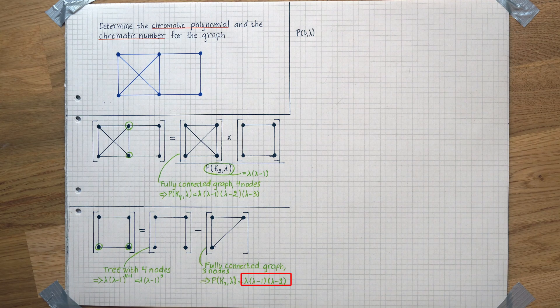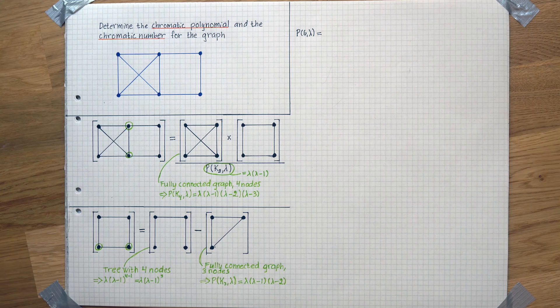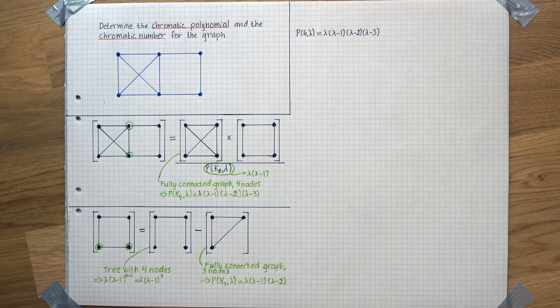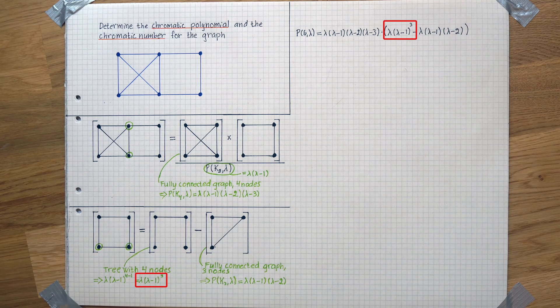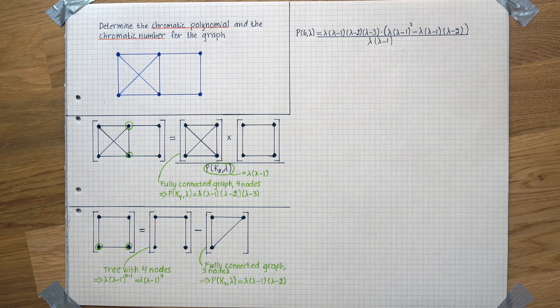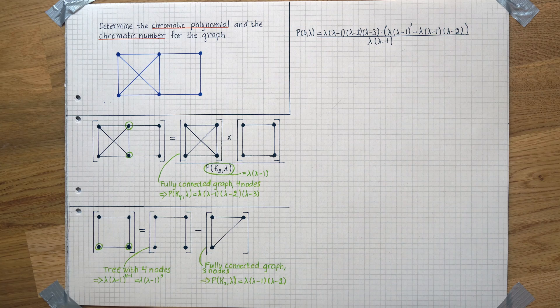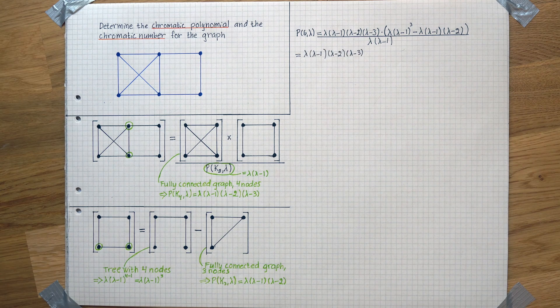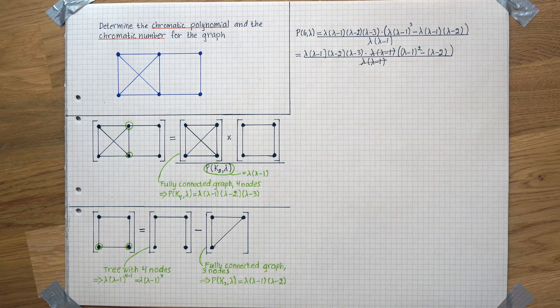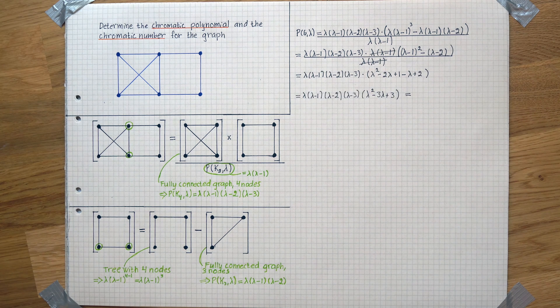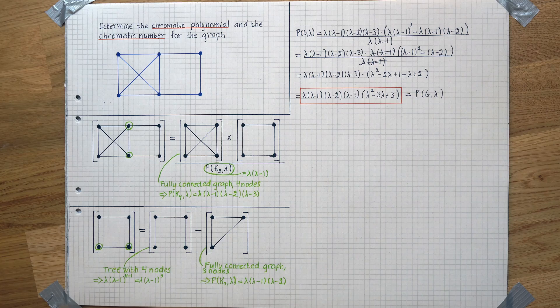To get the chromatic polynomial, we'll put together the information we've gathered so far. We'll take the first graph times the second graph that is equal to this subtraction, and then we divide it all with this. We'll neaten up the expression by breaking out lambda times lambda minus 1 so that we'll get rid of the division. And voila! Here's our chromatic polynomial.